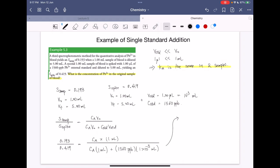So I'll move up here and we have 0.193 over 0.419 is equal to CA divided by CA plus 1.56 ppb.